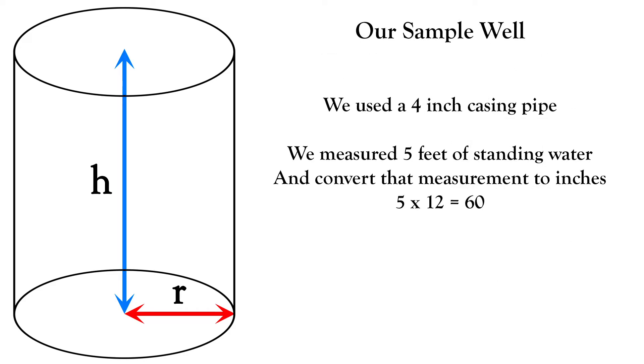Let's do a sample well and this will make a lot more sense. Say we have a four inch casing pipe and have five feet of standing water. We want to convert all measurements to inches for our calculations, so we say we have 60 inches of water.